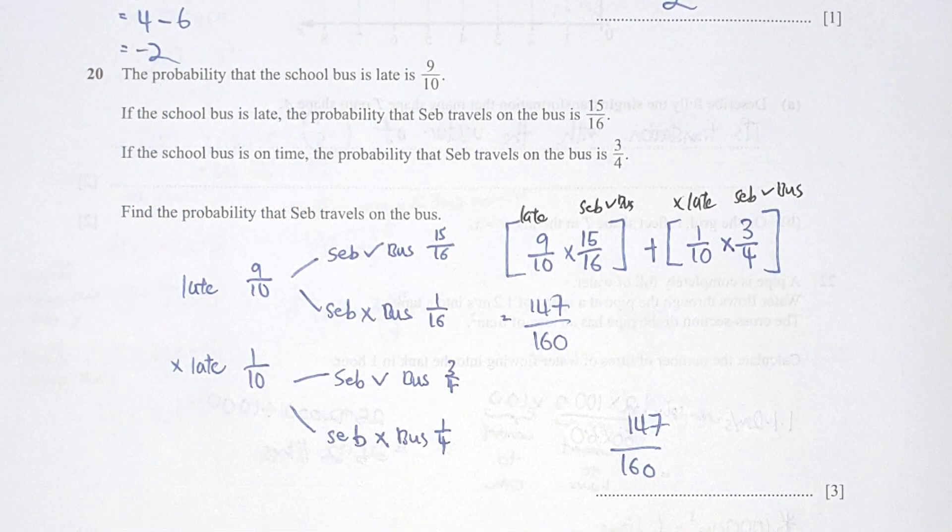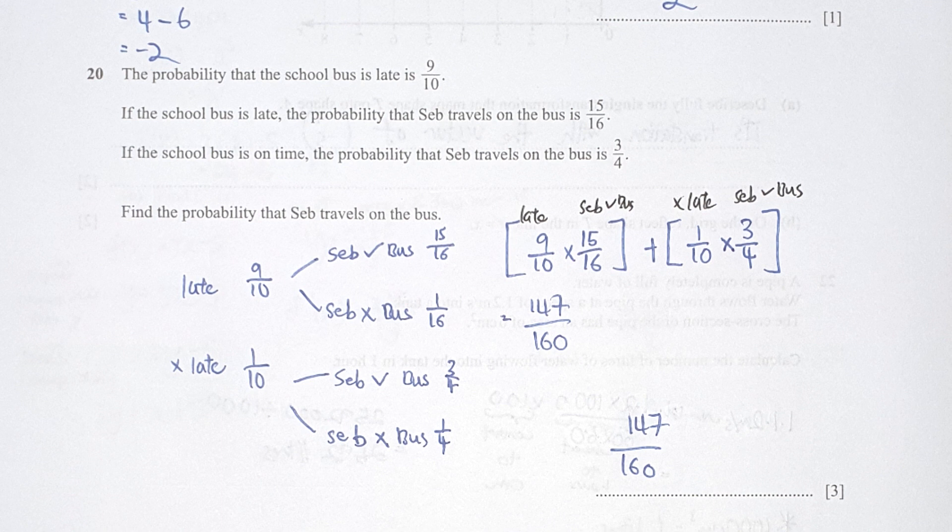For question 20, I actually drew down a tree diagram, so that you can see it clearly. So if it's late, it's 9 over 10. Based on when it's late, Seb will still take a bus is 15 over 16. Whereby when it's late and Seb don't take a bus, it's 1 over 16. For the other one, if let's say the school bus isn't late, it will be 1 over 10. When it isn't late, Seb taking a bus is 3 over 4. And when it's not late, Seb not taking a bus is 1 over 4.